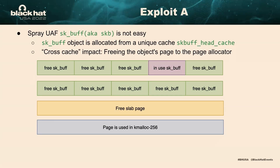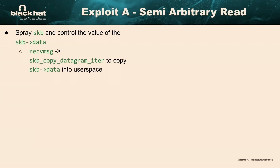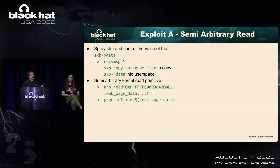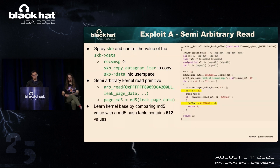Spraying on the socket buffer object is not easy because socket buffer objects are allocated from a separate slab cache, meaning conventional heap spray techniques don't work. But there's something called cross-cache attack: if we can free all the socket buffer objects on the same slab page and free it, the page may have a chance to be returned to the page allocator and used by other caches that could be impacted by normal heap spray. The chance is very small. Once we can spray the SKB and control the SKB data, when we call recvmsg, the kernel will copy the address from SKB data back to user space.